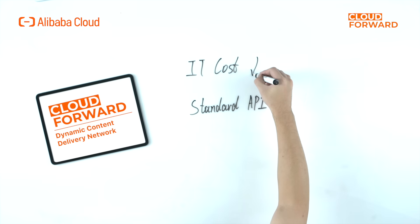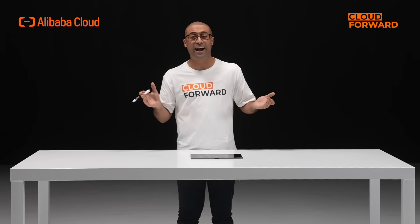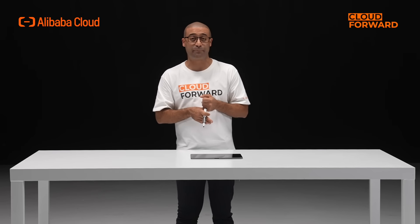Moreover, Alibaba DCDN can help businesses reduce unnecessary data transfer between end users and origin servers, lowering IT costs spent on bandwidth, computing power, and data transfer. To help you deploy your network on DCDN smoothly, we provide industry-standard APIs to improve usability and adaptability.